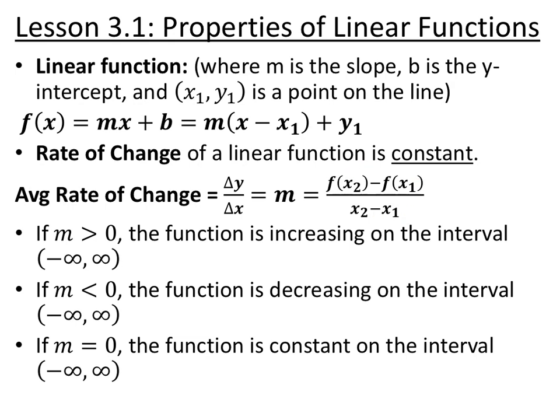If your slope is positive, then you're getting bigger, you're increasing the entire time. If your slope is negative, you're getting smaller, so you're decreasing. If your slope is equal to 0, that means you're a horizontal line, you're constant.